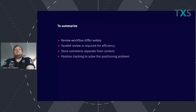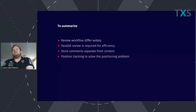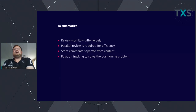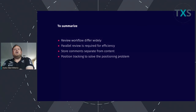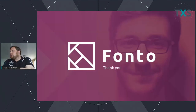To summarize: we clearly talked about different workflows for review that differ widely between organizations and sometimes within them. We talked about the need for parallel review to achieve efficiency and beat time to market. We covered the underlying architecture of review space — storing comments separately from content — and we talked about precision tracking to solve the positioning problem. Thank you for your attention.